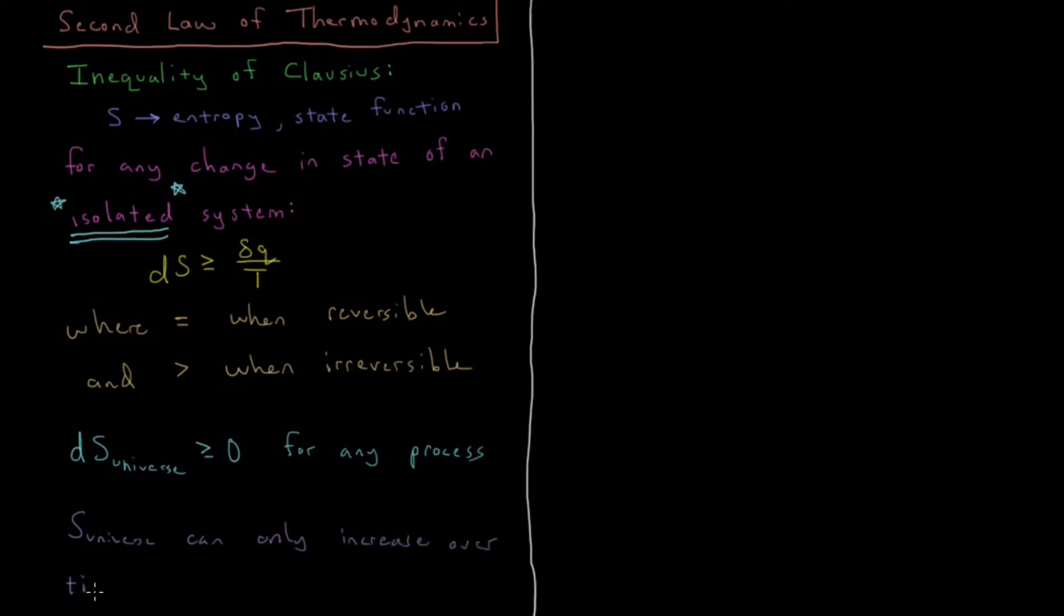Sometimes the second law of thermodynamics is said to give us the arrow of time. It tells us which direction in time is forward and which direction is backward, because the direction in time in which the entropy of the universe increases is going forward in time, and the direction in time in which the entropy of the universe decreases is the past.